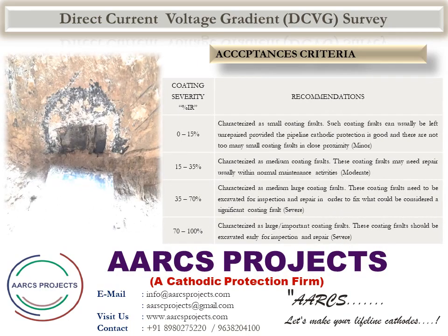Acceptance Criteria: The acceptance criteria of Direct Current Voltage Gradient Survey depend upon coating severity as a percentage IR. 0% to 15% is characterized as small coating faults — minor. Such coating faults can usually be left unrepaired provided the pipeline cathodic protection is good and there are not too many small coating faults in close proximity. Greater than 15% to 35% is characterized as medium coating faults — moderate. These coating faults may need repair, usually within normal maintenance activities.